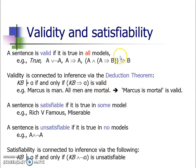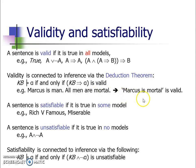Going forth with validity and satisfiability: a sentence is valid if it is true in all models — that is, it must be a universal truth to be called valid. Validity is connected to inference via the deduction theorem: the knowledge base entails alpha if and only if knowledge base implies alpha is valid. For example, 'Marcus is a man' and 'all men are mortal' are two sentences in the knowledge base; then 'Marcus is mortal' can be implied from the knowledge base and is a valid statement. A sentence is satisfiable if it is true in at least one model.